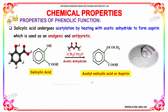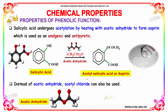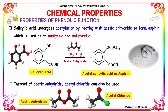The chemical properties: salicylic acid undergoes acetylation by heating with acetic anhydride to form aspirin, which is used as an antipyretic in medical industries. When salicylic acid is made to undergo reaction in the presence of acetic anhydride, it forms aspirin.